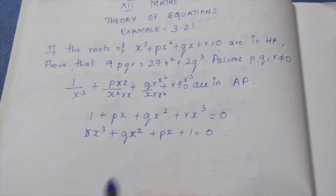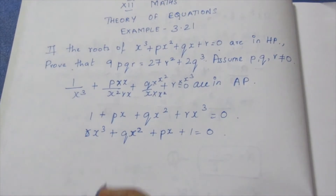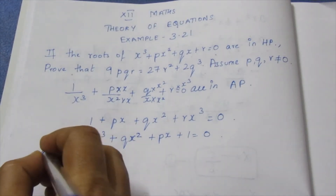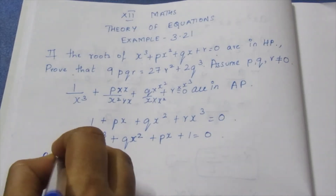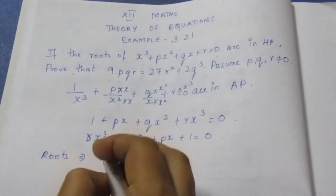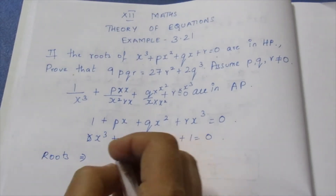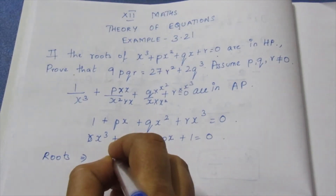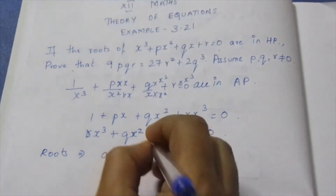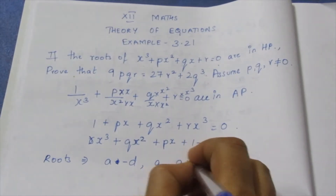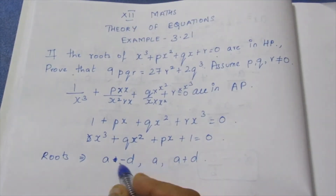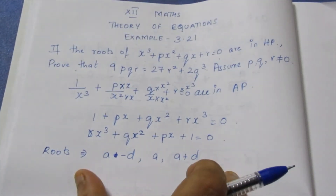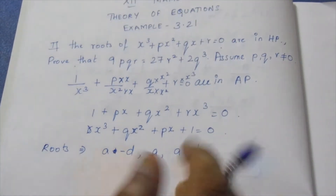We know that there are 3 roots. In AP, three roots are usually taken as a-d, a, and a+d, where a is the middle root and d is the common difference.